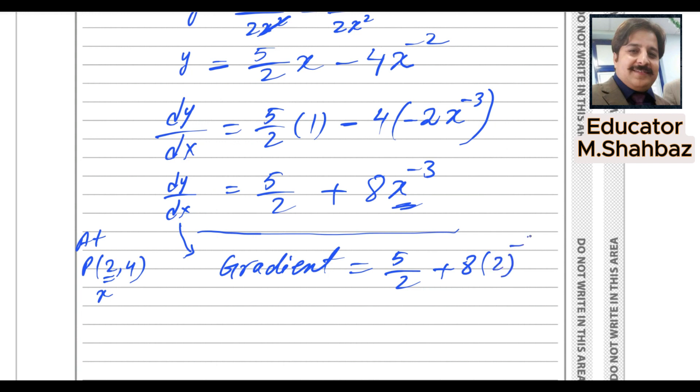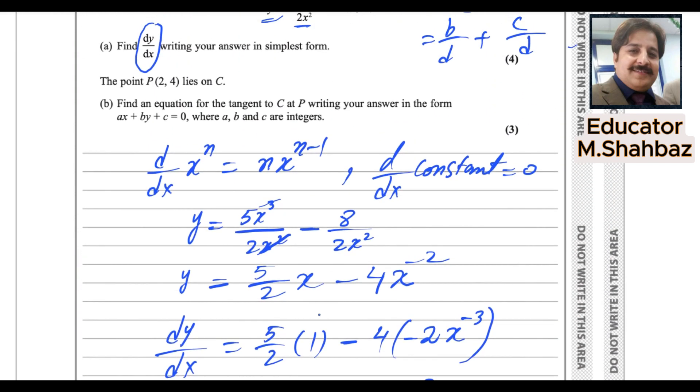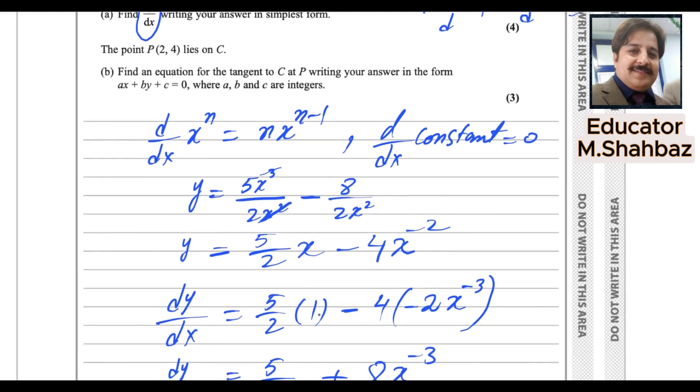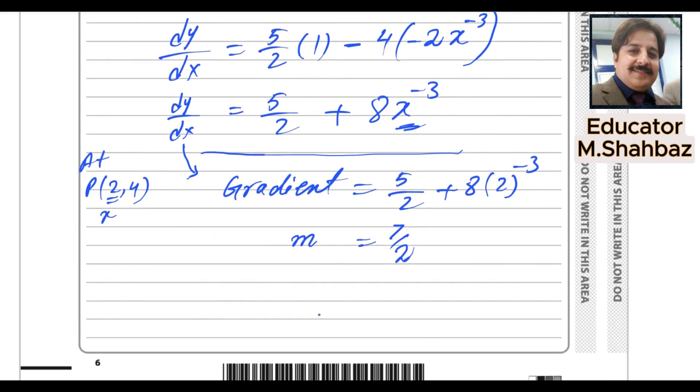8 into 2 power minus 3. Use calculator. So it will be 7 over 2 for sure. If you don't know how to do it mentally, you can use calculator for this purpose. So this is the gradient. And we want to find the gradient equation of the tangent at this point P.